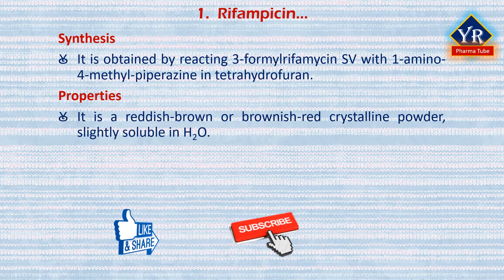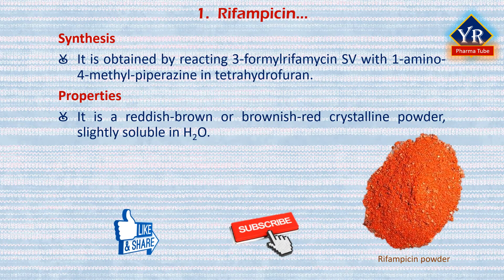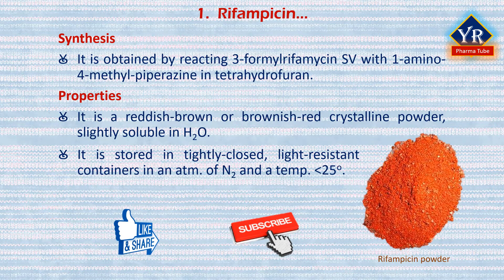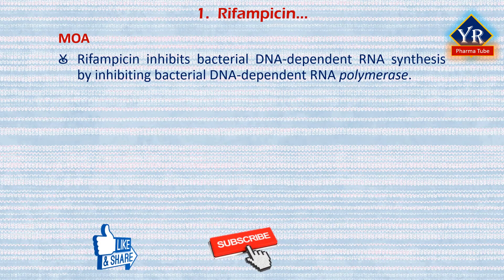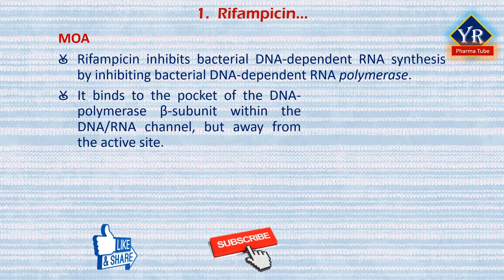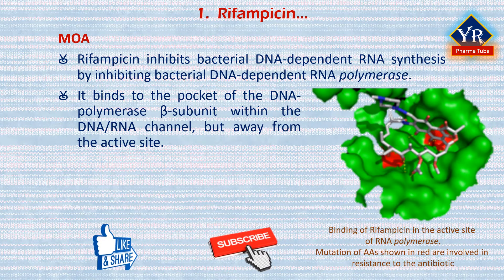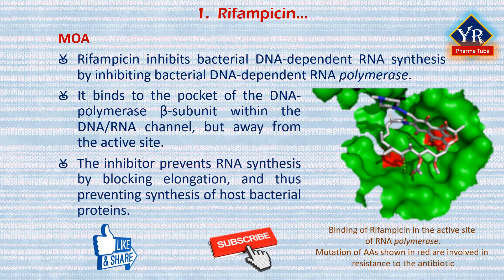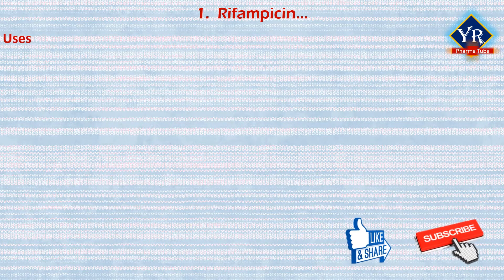Rifampicin is a reddish-brown to brownish-red crystalline powder, slightly soluble in water. It is stored in tightly closed, light-resistant containers in an atmosphere of nitrogen at a temperature not exceeding 25 degrees. Rifampicin inhibits bacterial DNA-dependent RNA synthesis by inhibiting bacterial DNA-dependent RNA polymerase. Crystal structure data and biochemical data suggest that rifampicin binds to the pocket of the RNA polymerase beta subunit within the DNA or RNA channel but away from the active site.